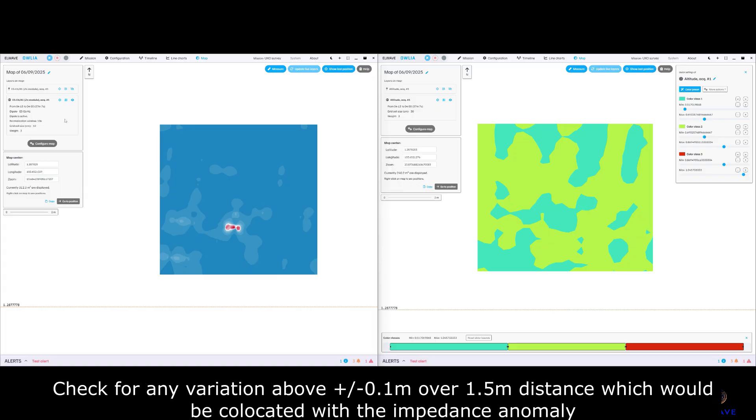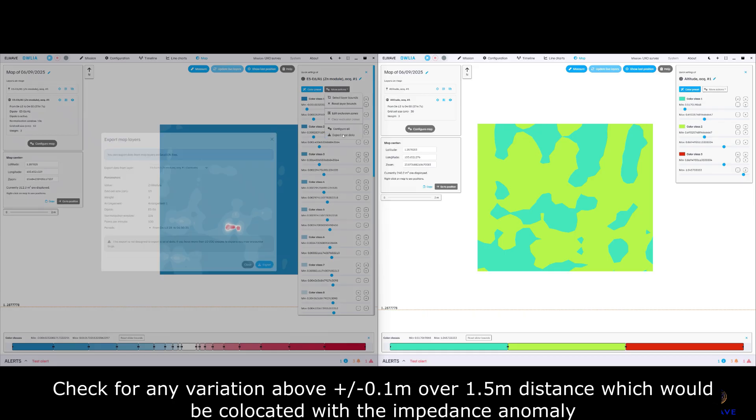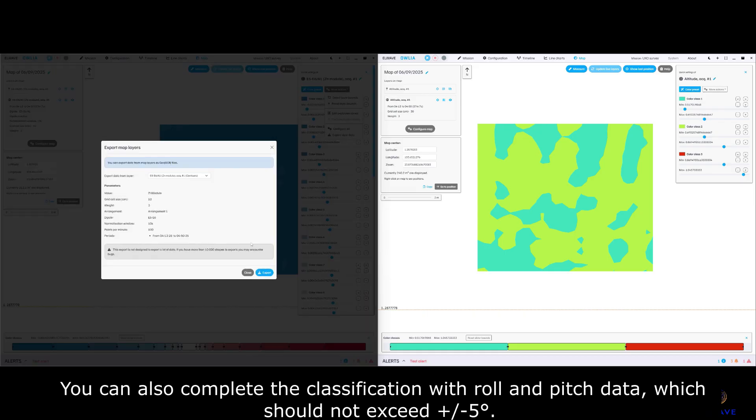Check for any variation above plus or minus 0.1 meter over 1.5 meter distance which would be collocated with the impedance anomaly. You can also complete the classification with roll and pitch data, which should not exceed plus or minus 5 degrees.